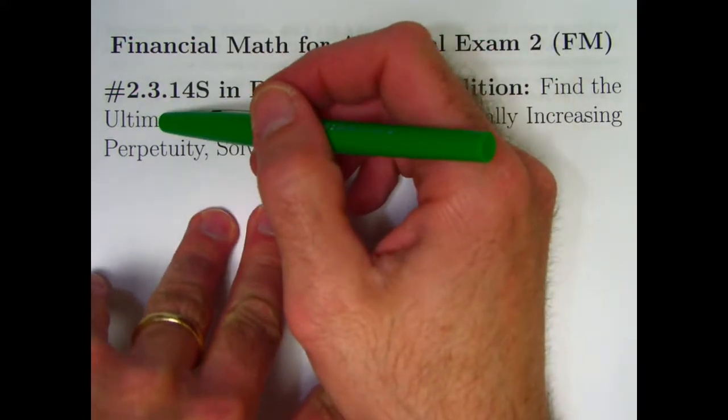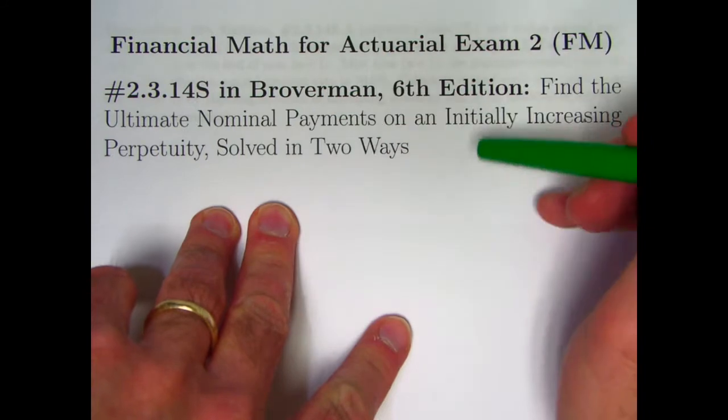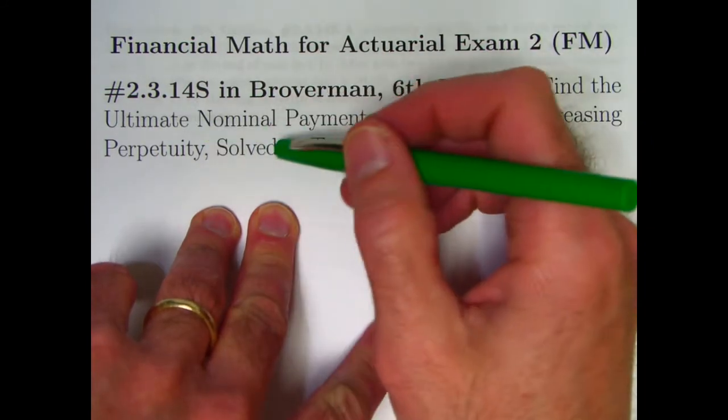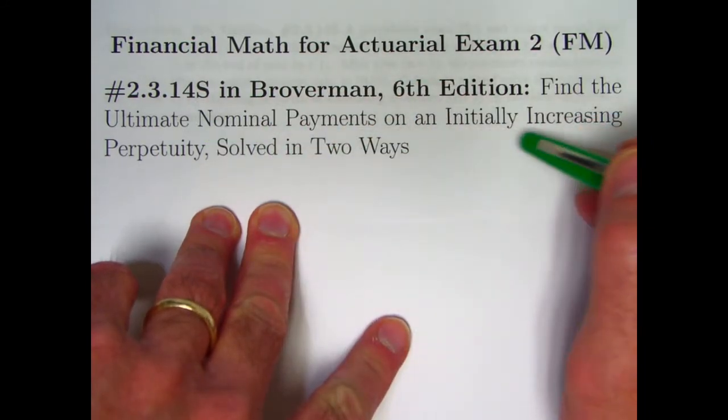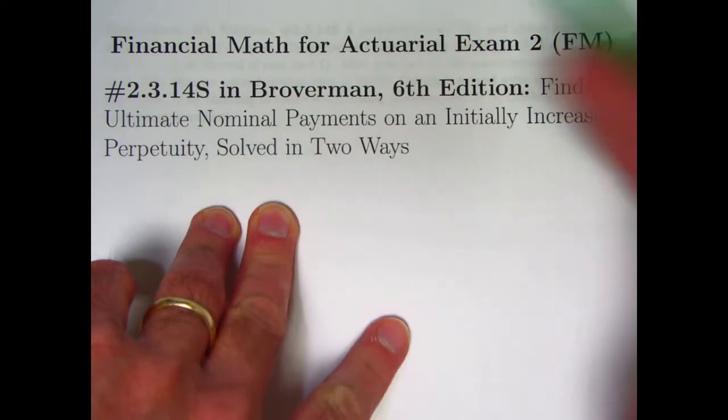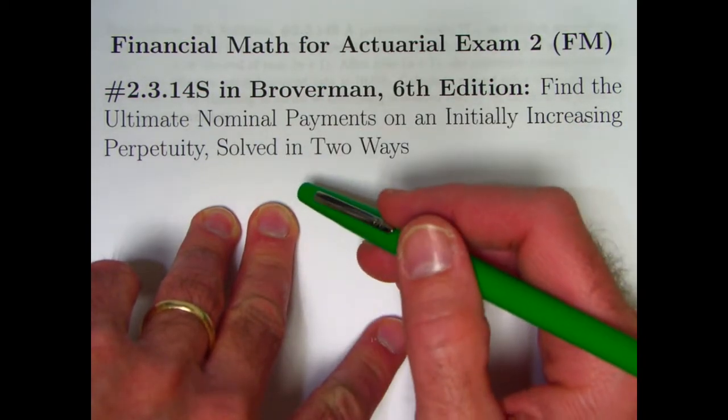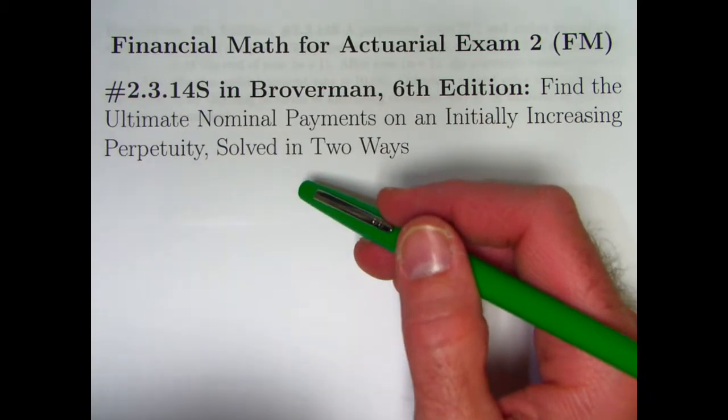In this video, we're solving problem 2.3.14S in Broverman. We'll be finding the ultimate nominal payment on an initially increasing perpetuity, after which it will be level. We're also going to add an extra wrinkle to this. We're going to solve it in two ways.